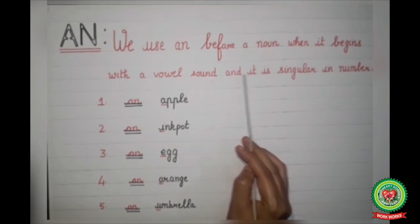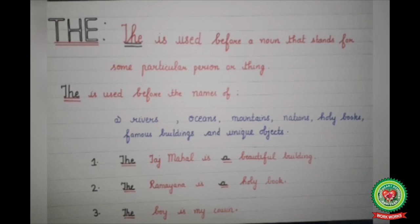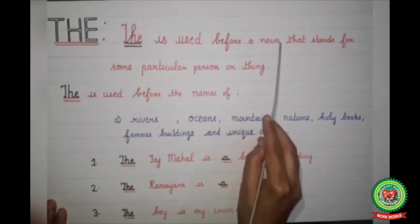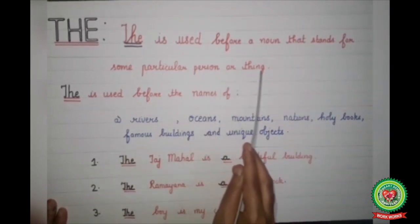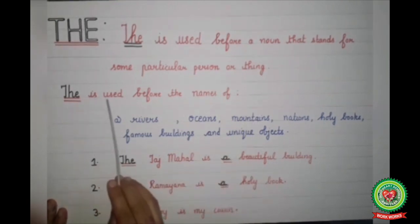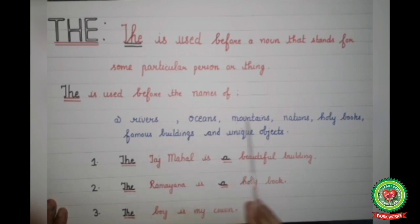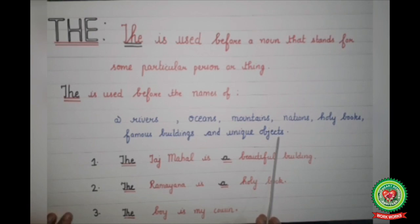Now kids, I will tell you the use of the article 'the'. 'The' is used before a noun that stands for some particular person or thing. 'The' is also used before the names of rivers, oceans, mountains, nations, holy books, famous buildings, and unique objects. Let us take some examples: 'The Taj Mahal is a beautiful building'.